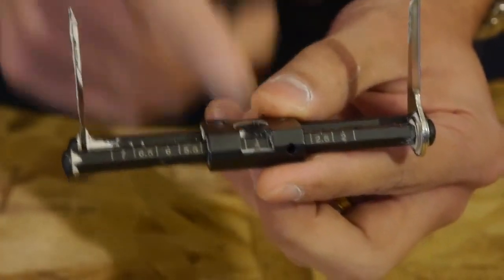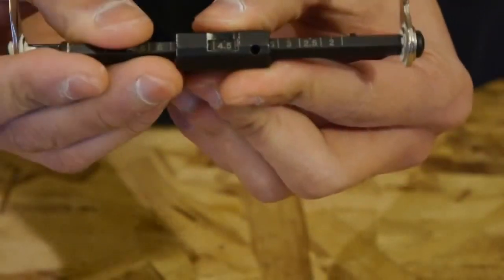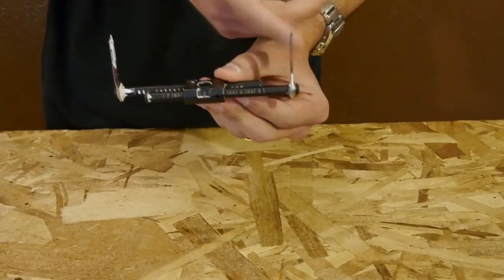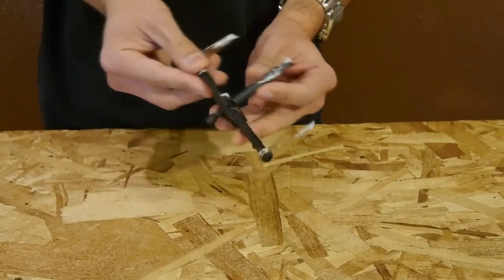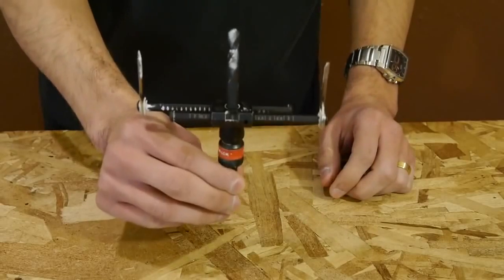So if you want to make a 5 inch hole, make sure to set both arms to 5 inches. And once you've set both arms to the desired size, install the pilot bit back into the hole cutter assembly and secure it by locking it into the arbor. From here, now you're ready to make some holes.